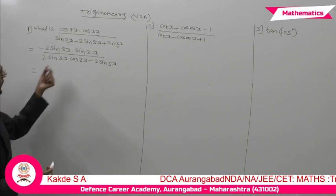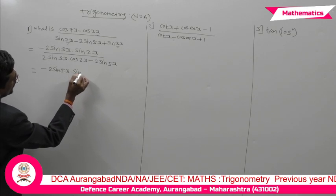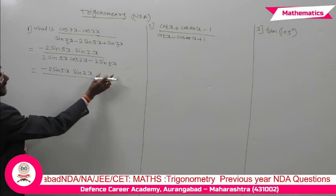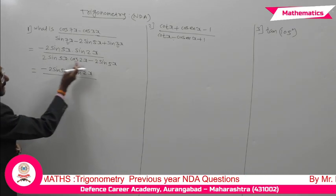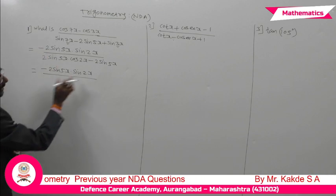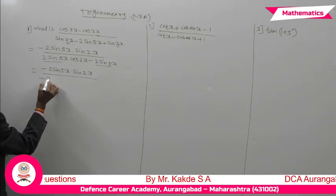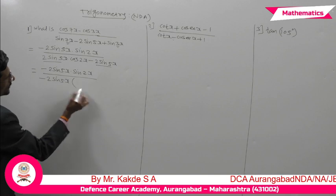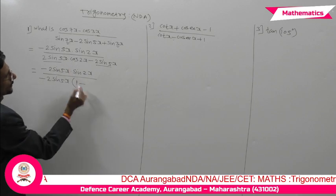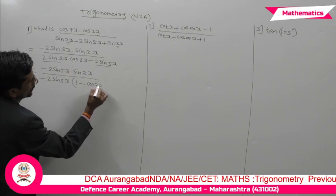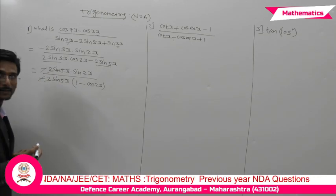Now, observe what is common from the denominator. The numerator is minus 2sin5x·sin2x. Taking minus 2sin5x common from the denominator: inside the bracket we get cos2x minus 1. Because minus is taken common, the sign flips. The 2sin5x in numerator and denominator cancel out, leaving sin2x upon (1 minus cos2x).